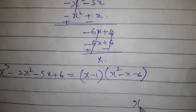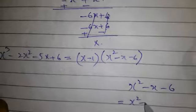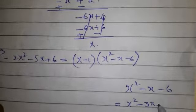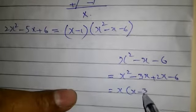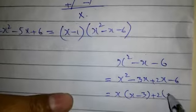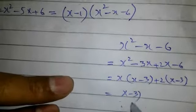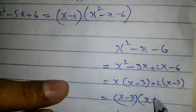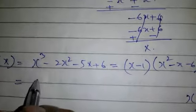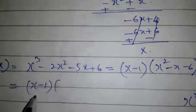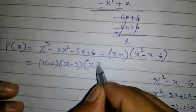We factorize x² - x - 6 = x² - 3x + 2x - 6. x is common: x(x - 3). 2 is common: 2(x - 3). (x - 3) is common, we get (x + 2). So this equals (x - 1)(x - 3)(x + 2).